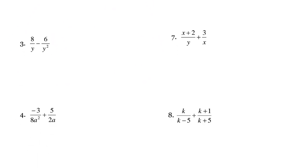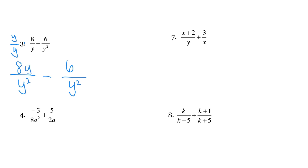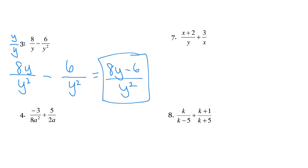Number 3, we have 8 over y minus 6 over y squared. This is similar to the last one — we already have y squared on the right side, but the left fraction is missing one of the y's. So we have to multiply by an additional y. Our common denominator is going to be y squared. The fraction on the right doesn't change; the fraction on the left changes into 8y over y squared. Now we just combine and get 8y minus 6 over y squared.